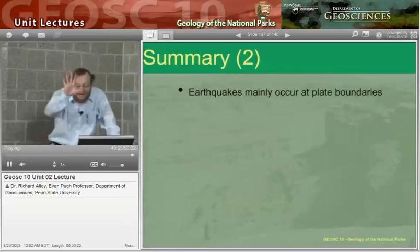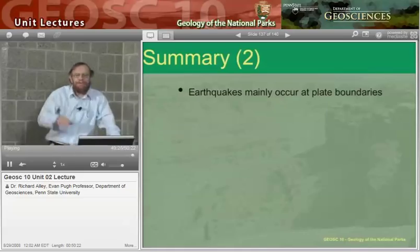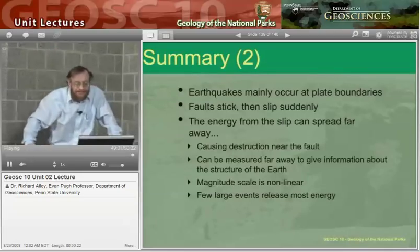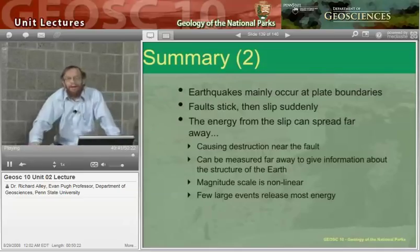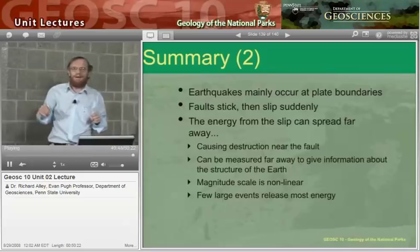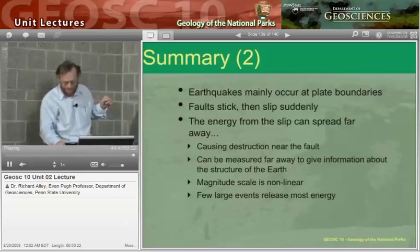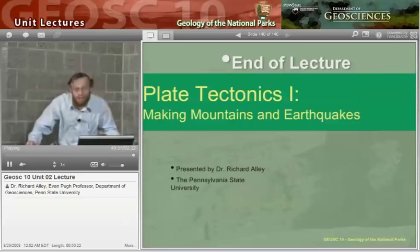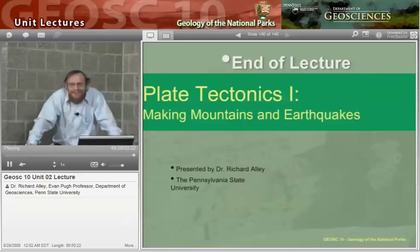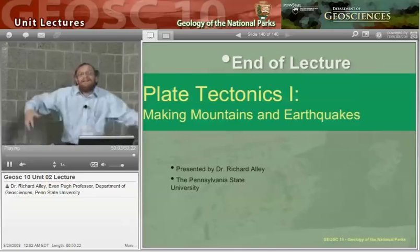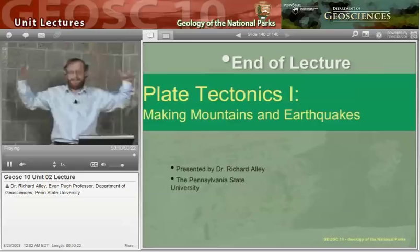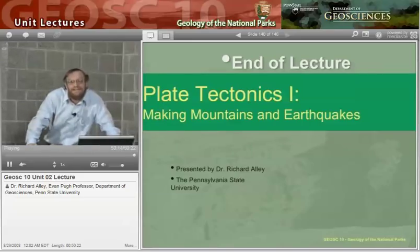Quick summary: earthquakes mainly at plate boundaries, though not entirely. Faults get stuck, then they suddenly slip. When that happens, the energy spreads away on waves that cause a lot of destruction. You can measure them to get information about how the Earth works. When we say it was a little bit bigger, we mean it was a lot bigger. Most of the action is from the few big events. And so we're started on this very interesting journey to understand why there are mountains. The heat of the Earth is stirring things, moving things around, causing things to come up and down, to stick and slip — there's action. You can see there's more action coming, and we will get to that next time.